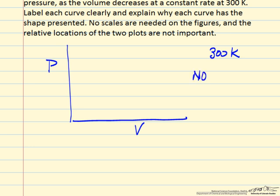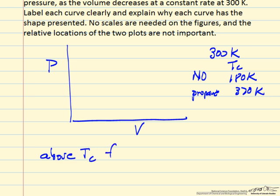For NO, critical temperature is 180 kelvin. And for propane, it's 370 kelvin. So we're above Tc for NO at 300, and we're below Tc for propane. So this is an important thing that determines the shape.